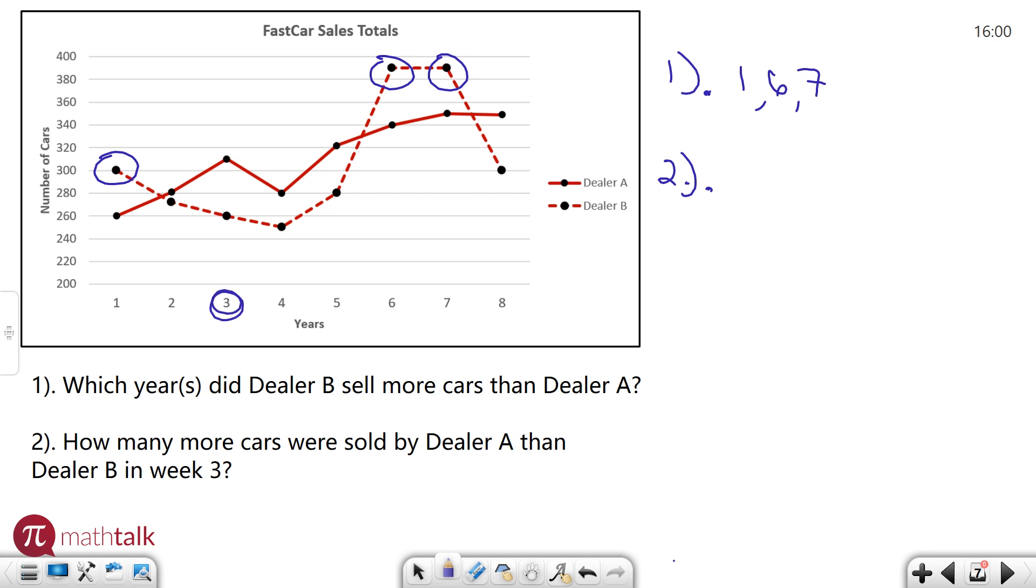So dealer A is here. Looks like it's probably about between 300 and 320. Let's call it 310. And then dealer B is right on 260. So basically how many more is 310 than 260? It's a subtraction problem. 310 minus 260 is 50. So there are 50 more cars.